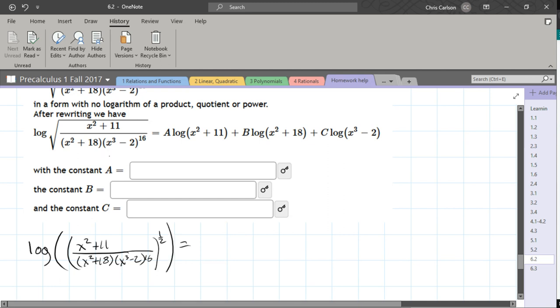We're going to deal with the outermost power first. That power, the exponent, comes out as a coefficient. So it's 1 half log x squared plus 11 over x squared plus 18 times x cubed minus 2 to the 16th.